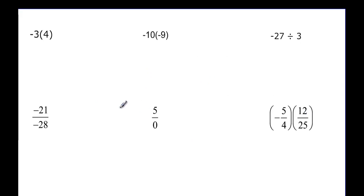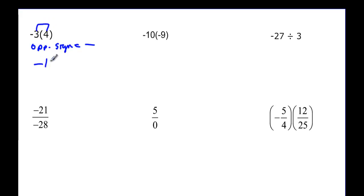Let's try some examples. Remember the rules. We have a negative times a positive — opposite signs — so our answer is going to be negative. We take 3 times 4, which is 12, giving us negative 12. Here we have the same signs, so we have a positive answer, and then we take 10 times 9 to be 90.